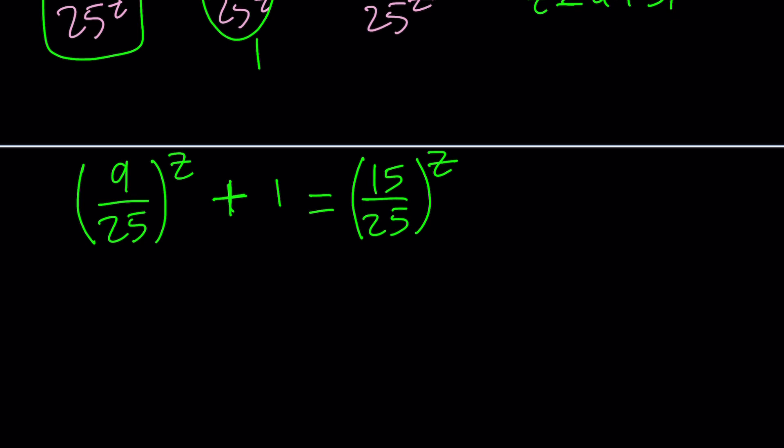9 and 25 are squares of primes. They have no common factors. 15 and 25 do have a common factor. Divide by 5, you're going to get 3 over 5. So let's rewrite it one more time with the simpler base. And now here's what I want you to notice.